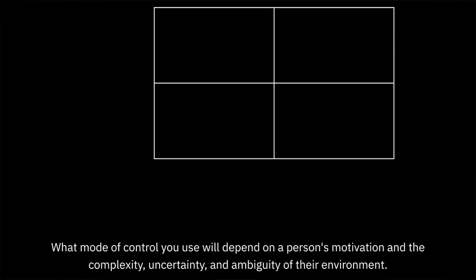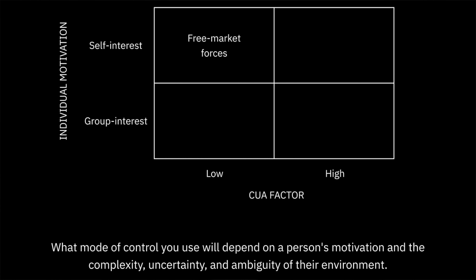Let's construct a 2x2 matrix with individual motivation on the y-axis and the CUA factor on the x-axis. Individual motivation can range from self-interest to group interest, and the CUA factor can range from low to high. When self-interest is high and the CUA factor is low, free market forces are the most appropriate mode of control. As individual motivation moves toward group interest, contractual obligations become the most appropriate. If group interest and the CUA factor are high, then cultural values becomes the best choice. Finally, when self-interest and the CUA factor are high, no mode of control will work well.